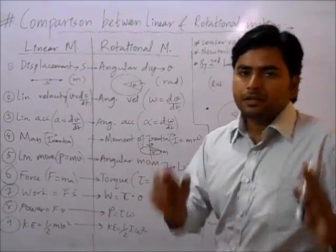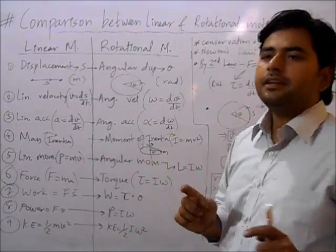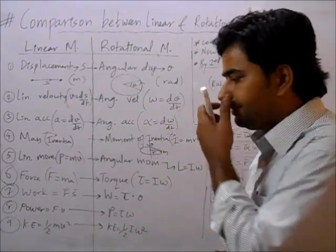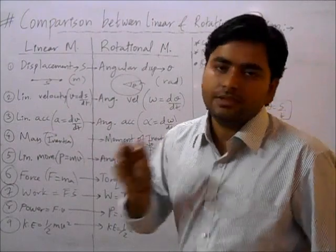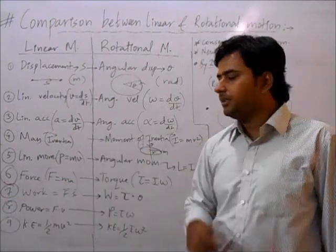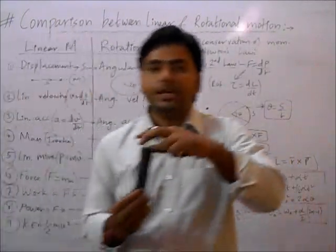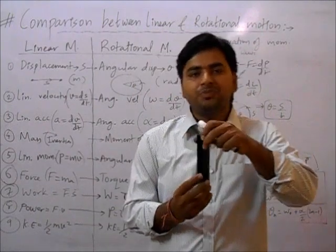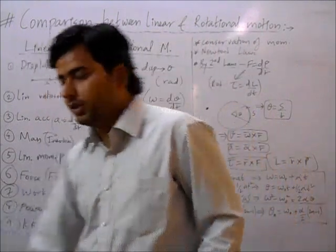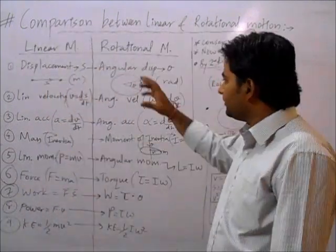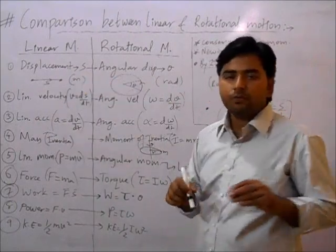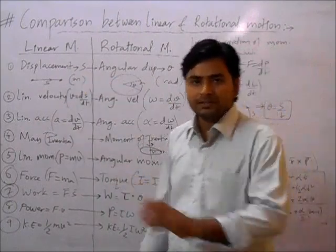Comparison between linear and rotational motion. Linear motion refers to straight line motion, while rotational motion involves a body rotating about an axis. Just as we define displacement in linear motion, we have corresponding quantities in rotational motion.